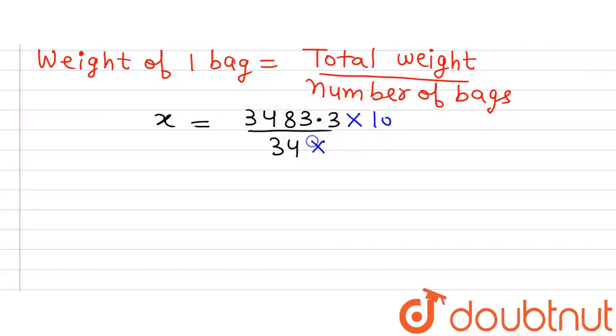In the numerator, on multiplying this number by 10, this decimal point will shift one digit to the right, which will give us 34,833.